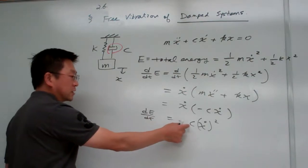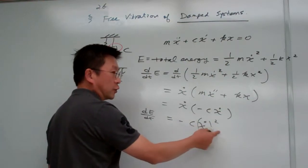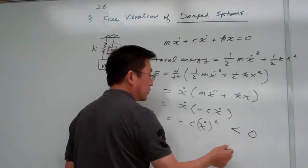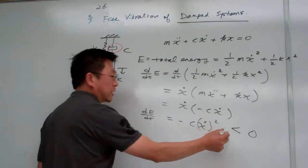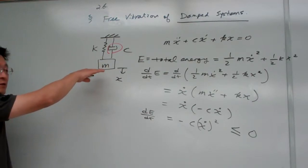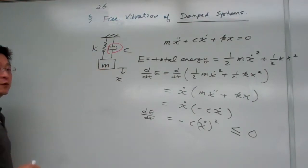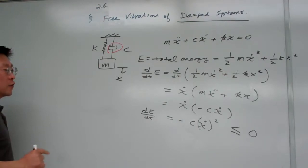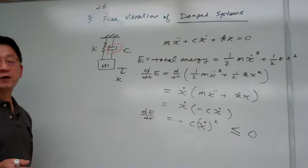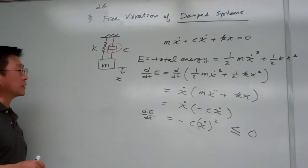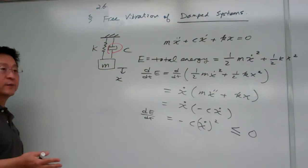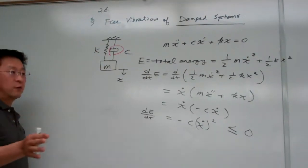The change of energy over time is negative. c is a constant and x-dot squared is always positive — unless it's zero. So dE/dt is less than or equal to zero, until everything stops and it equals zero. So eventually the system vibration is going to stop at equilibrium. The question is how fast this is going to stop — that is a more quantitative question we will answer later.